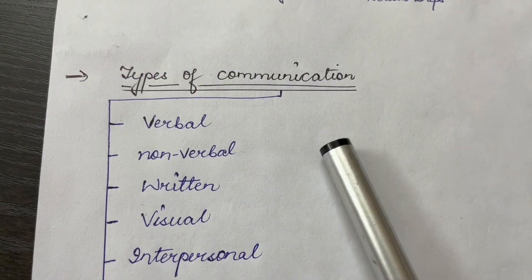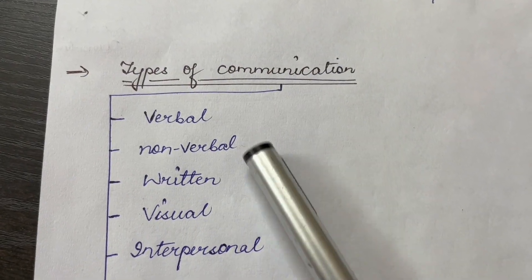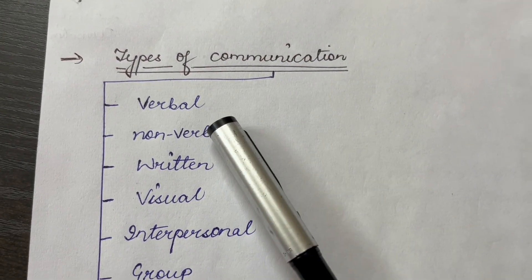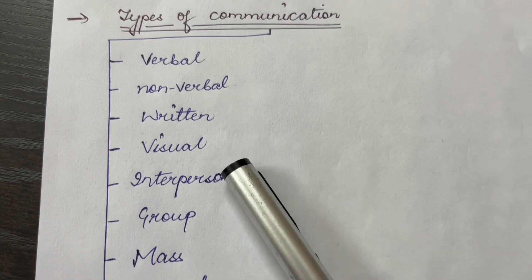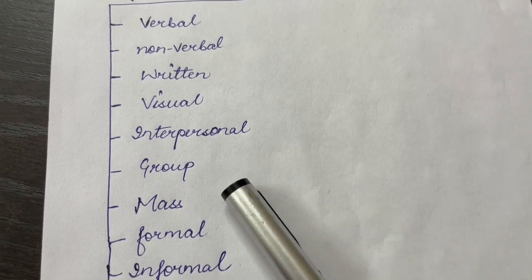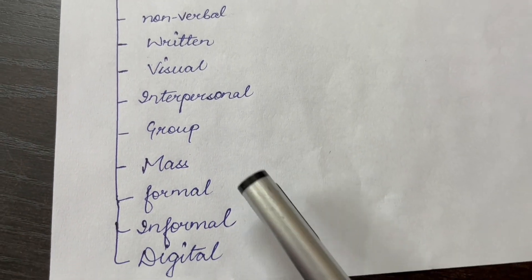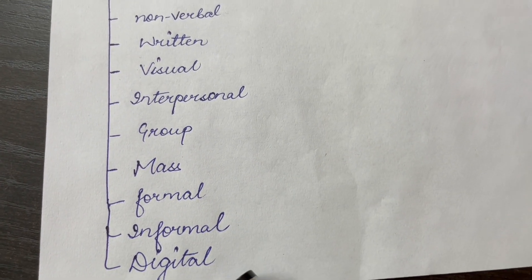And the next is types of communication. So what are the types of communication? Verbal, nonverbal, written, visual, interpersonal, group, mass, formal, informal and digital.